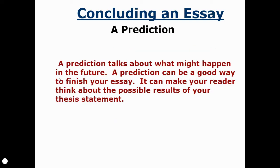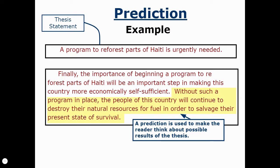A prediction is where you talk about what might happen in the future. For some topics, this is a really good way to finish your essay because it makes the reader think about possible results if they don't follow your argument. For example, if the thesis is 'A program to reforest parts of Haiti is urgently needed,' the conclusion with a prediction could read: 'Finally, beginning a program to reforest parts of Haiti will be an important step in making this country more economically self-sufficient. Without such a program in place, the people of this country will continue to destroy their natural resources for fuel in order to salvage their present state of survival.' Here we have restated the thesis and given a prediction about what will happen if the argument isn't followed.